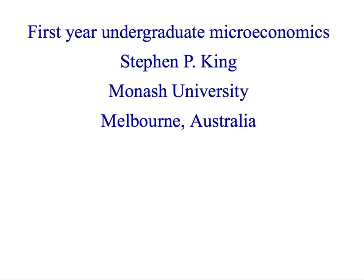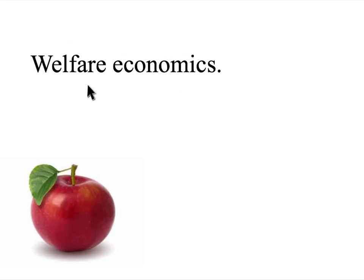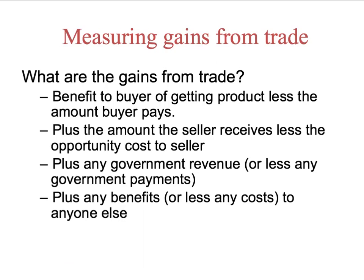Welcome back to First Year Undergraduate Microeconomics. We've been discussing welfare economics — in particular, we've been looking at the gains from trade. They're divided between the benefits of the buyers, the sellers, any government revenue or cost to the government, and any effects on anyone else.